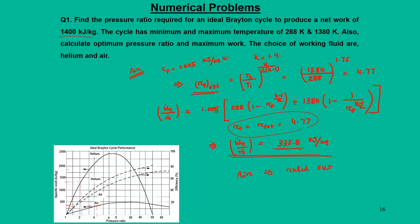This can also be verified graphically — looking at the graph, for air at pressure ratio close to 4.77, the specific work is close to 335 kJ/kg, and there is no possibility that with air we can have specific work beyond about 500 kJ/kg. But with helium at a pressure ratio of 2.2, we can easily reach 1400 kJ/kg. So this is cross-verified from the graphs. This concludes today's lecture. Thank you for your attention.